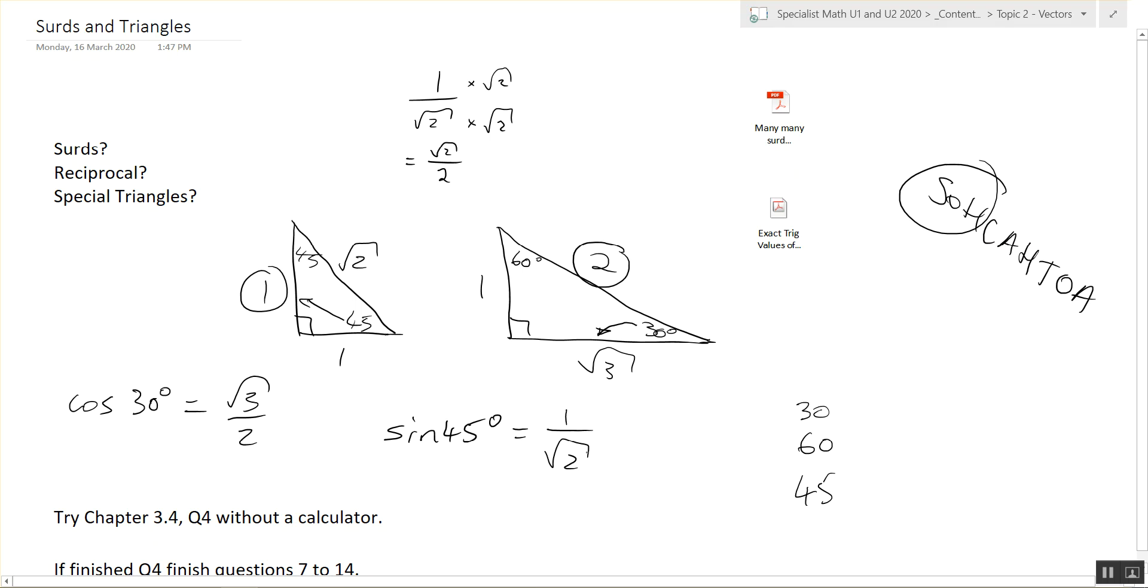Sine is opposite over hypotenuse. So we've got the opposite is 1 over square root 2. But what did I just tell you? If you have a square root on the bottom, you have to multiply by square root 2 on the top and bottom. Will we get one mark lost if we don't multiply by the square root? You will lose a mark, yes.